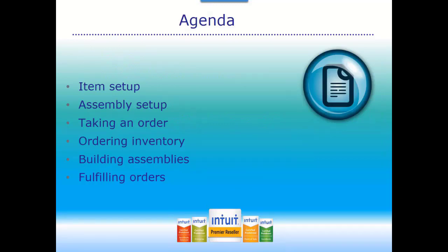Here's what we would like to cover with you today. First, we'll go through the item setup, then we'll go through assembly setup, and then we'll go through the typical manufacturing process. This includes taking an order, ordering raw material, building the inventory assembly, and then fulfilling the order for that assembly. Now let's go ahead and get started.